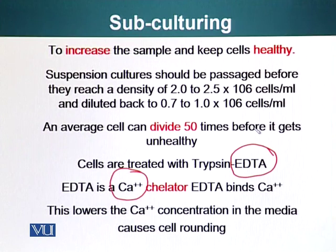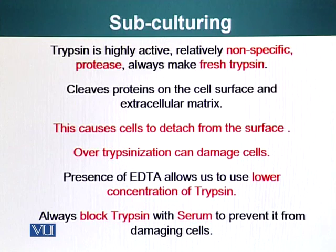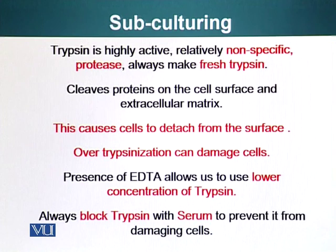Trypsin is a protease, and a higher concentration of trypsin can damage our cells. Trypsin is a highly active, relatively non-specific protease, and it should be made fresh every time. The reason is that trypsin itself is a protein molecule, and if you leave it sitting, the trypsin molecules will start digesting each other, and ultimately you will have zero enzymatic activity left. So please make trypsin fresh whenever you want to use it. Also, over-trypsinization can damage the cells, and EDTA helps in that regard by allowing us to use a lower concentration of trypsin.